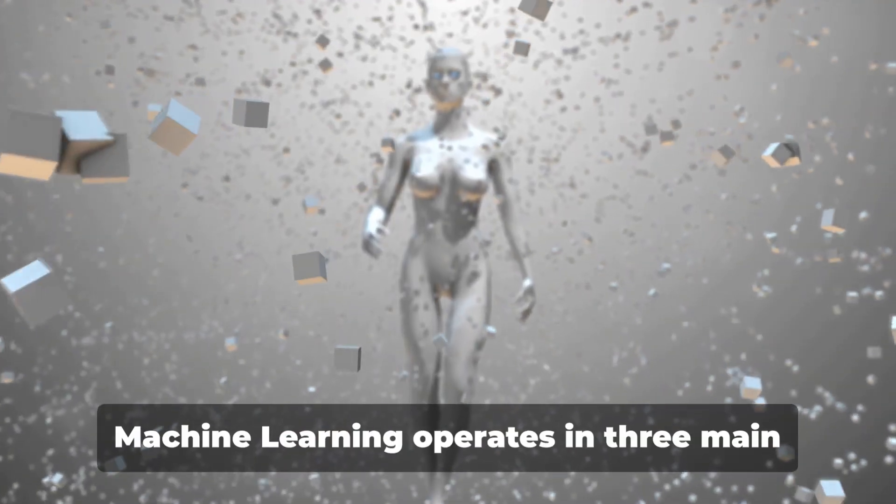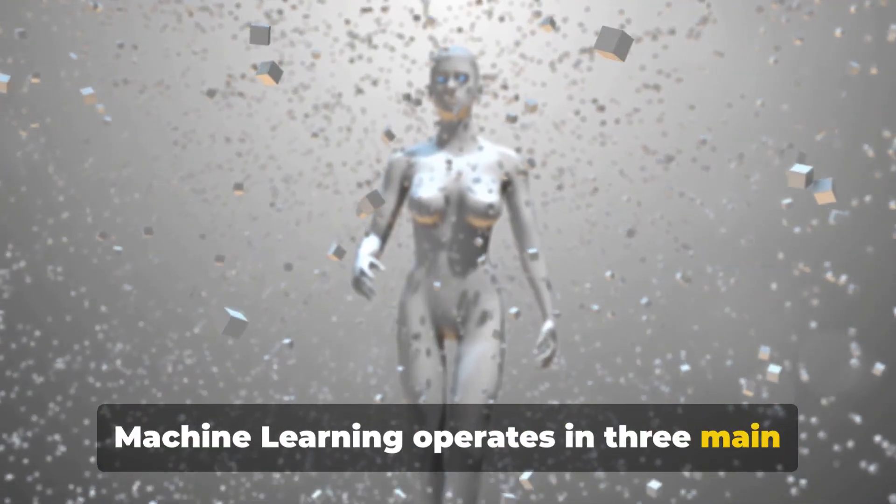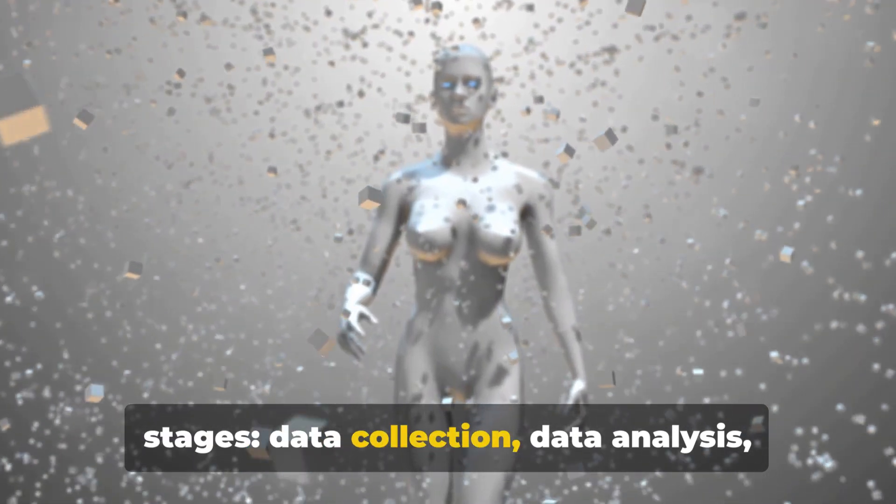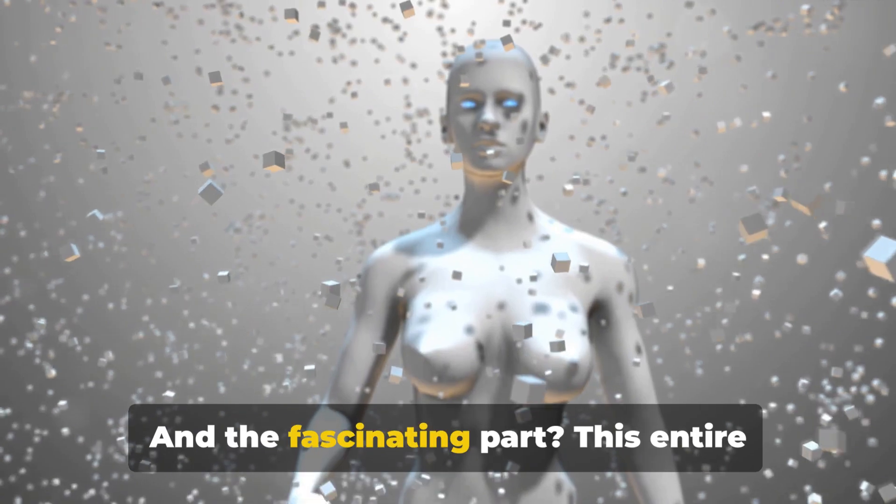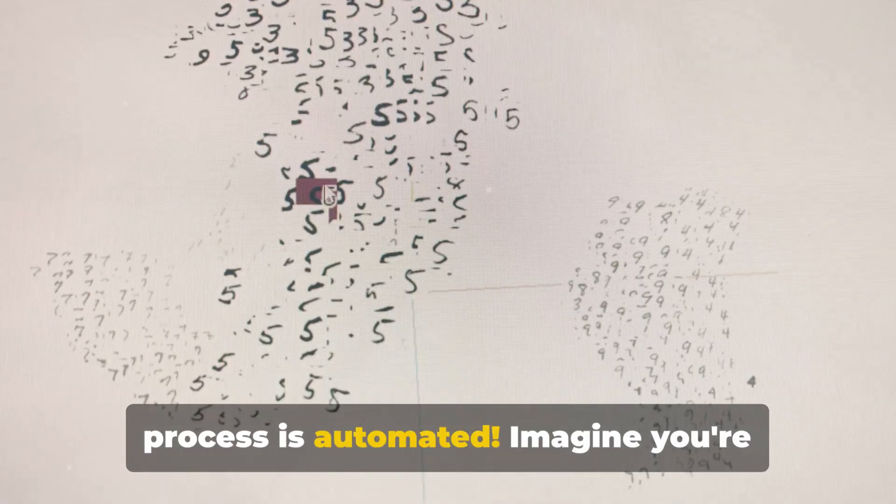Well, let's break it down. Machine learning operates in three main stages: data collection, data analysis, and prediction making. And the fascinating part, this entire process is automated.